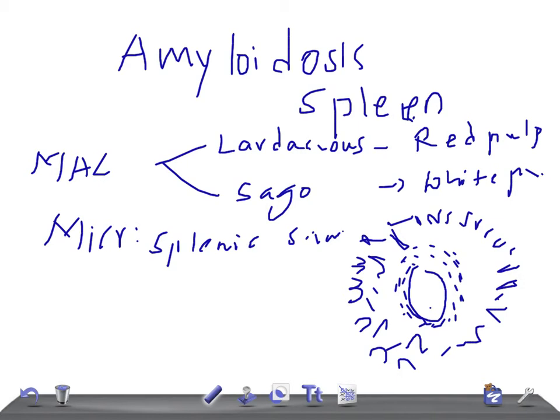Additionally, congo red staining is used for amyloidosis. Congo red staining gives a pink or red color to amyloid under light microscopy. These are the gross and microscopic features of amyloidosis of the spleen. Thank you so much for watching this video — take care.